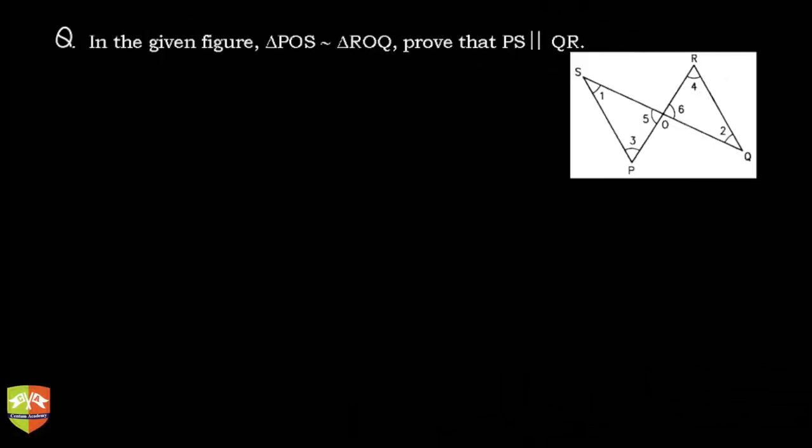Hello and welcome to another problem solving session on triangles. In this question, it's given that triangle POS and triangle ROQ are similar. You have to prove that line PS is parallel to QR.